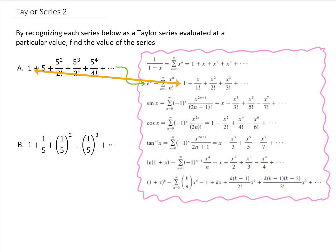Notice our first term is 1, our second term is 5, but our third term we square that 5 and divide by 2 factorial, and the fourth term we cube that 5 and divide by 3 factorial, and so on.